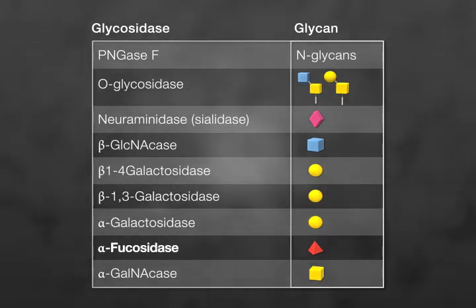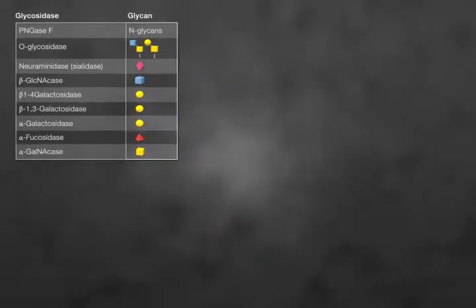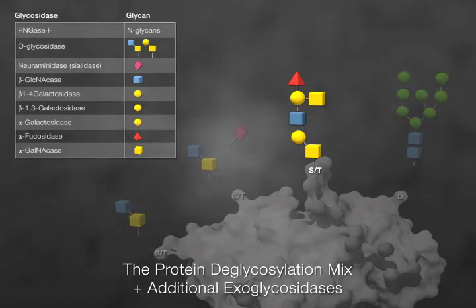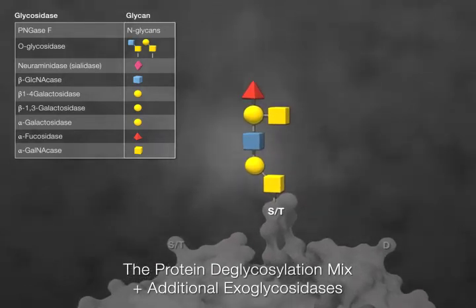Some glycoproteins have O-glycans that are resistant to the protein deglycosylation mix. However, additional glycosidases can be used along with the protein deglycosylation mix to facilitate the removal of the glycan.